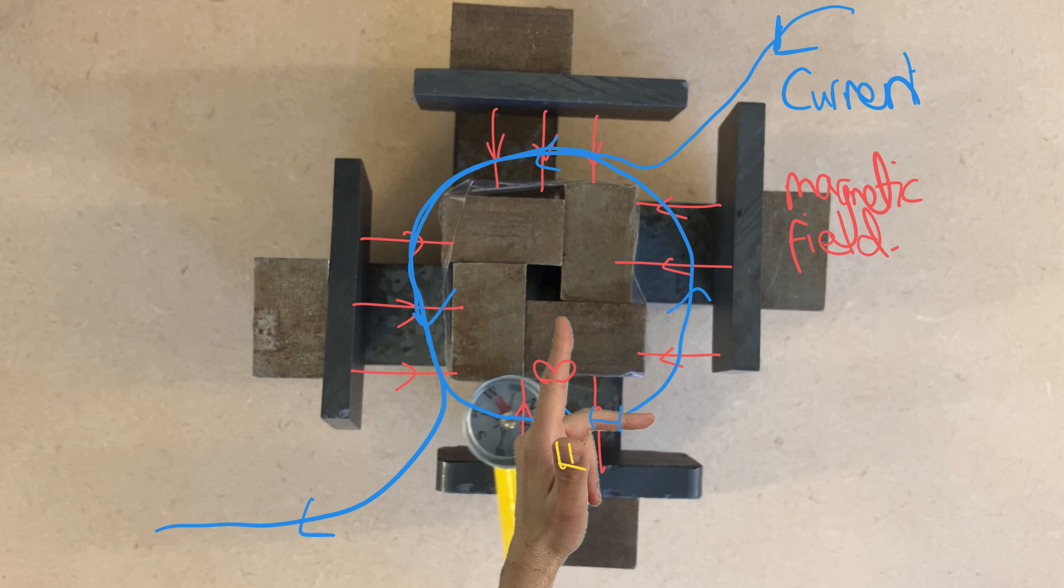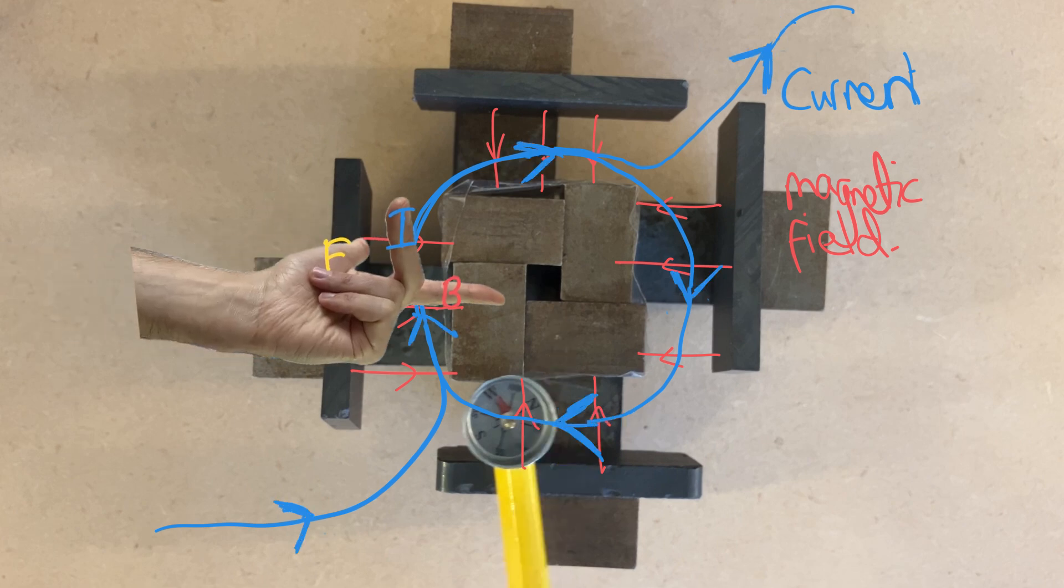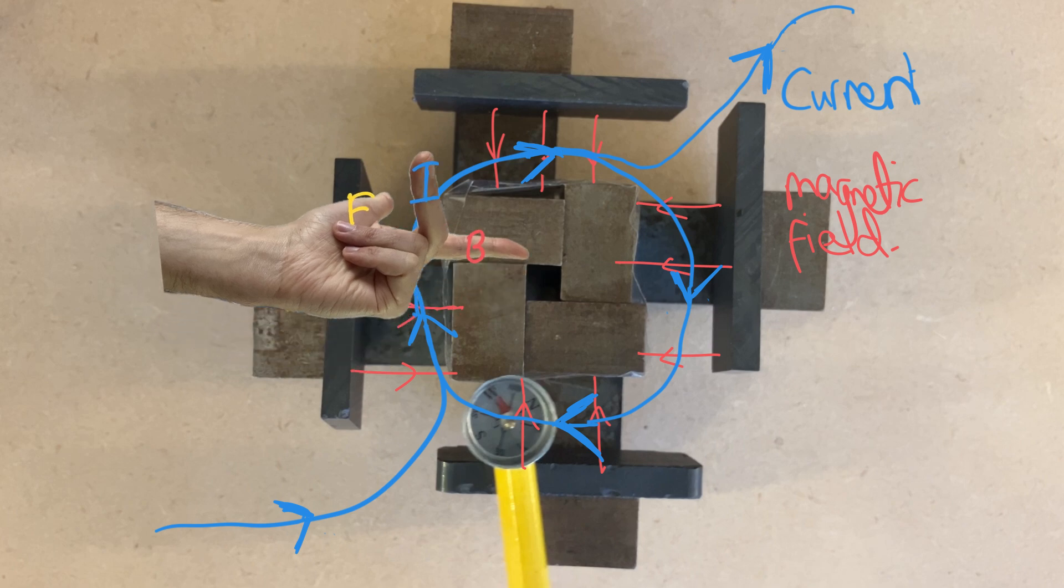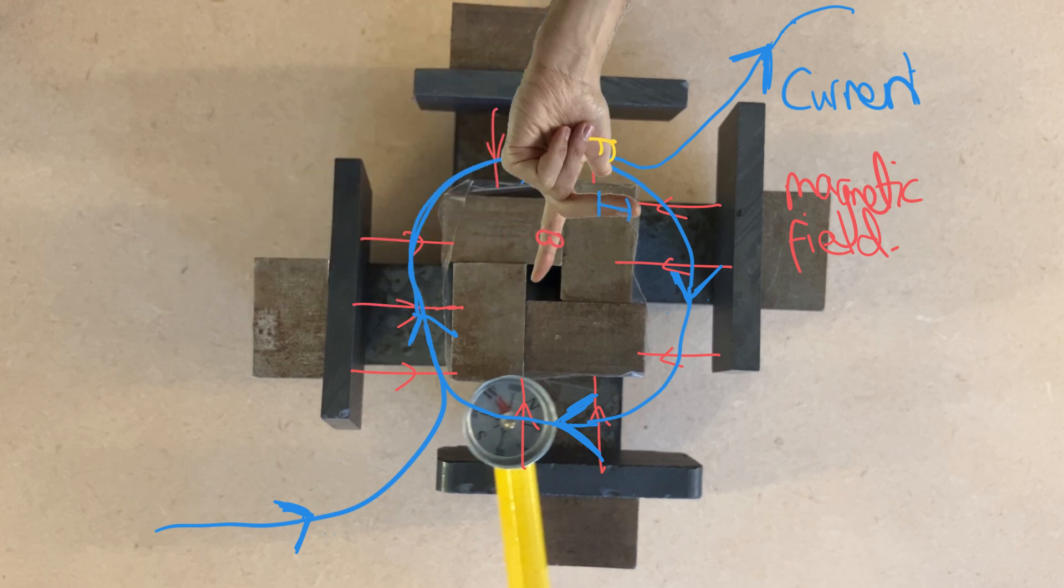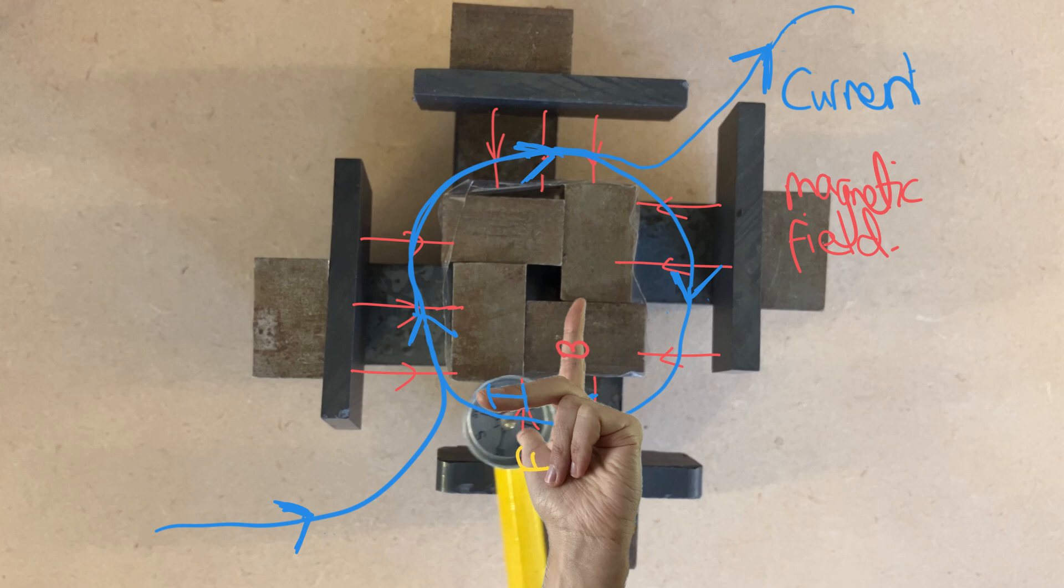But the signal generator supplies an alternating current which will cause the current to reverse its direction. When that happens, if we point the first finger in the direction of the magnetic field and the second finger in the direction of the current, this time our thumb points down into the screen and that will be the same in all the positions around. Therefore that creates a force on the cup going down into the screen.